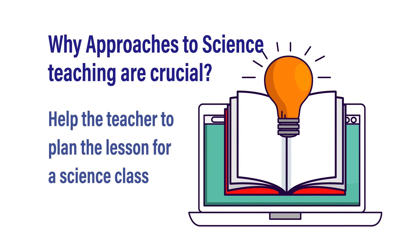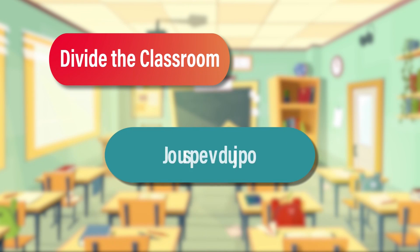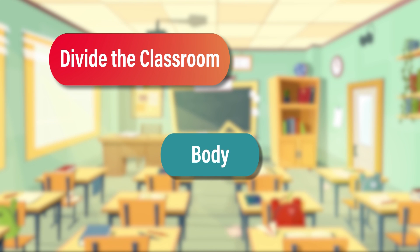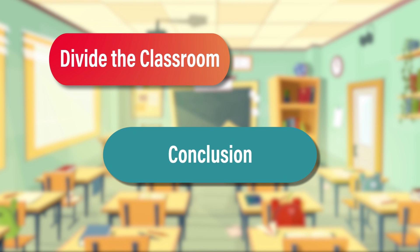Another important point is that teaching approaches also help the teacher plan the lesson for a science class. A class is generally 30 to 40 minutes, and the teacher is supposed to divide it into an introduction, the body of the lesson plan, and then the conclusion. So how the teacher is going to introduce a concept — whether to name the concept in the beginning, or expect the learner to come to the concept over a period of time — these decisions have to be taken according to the approach the teacher selects.